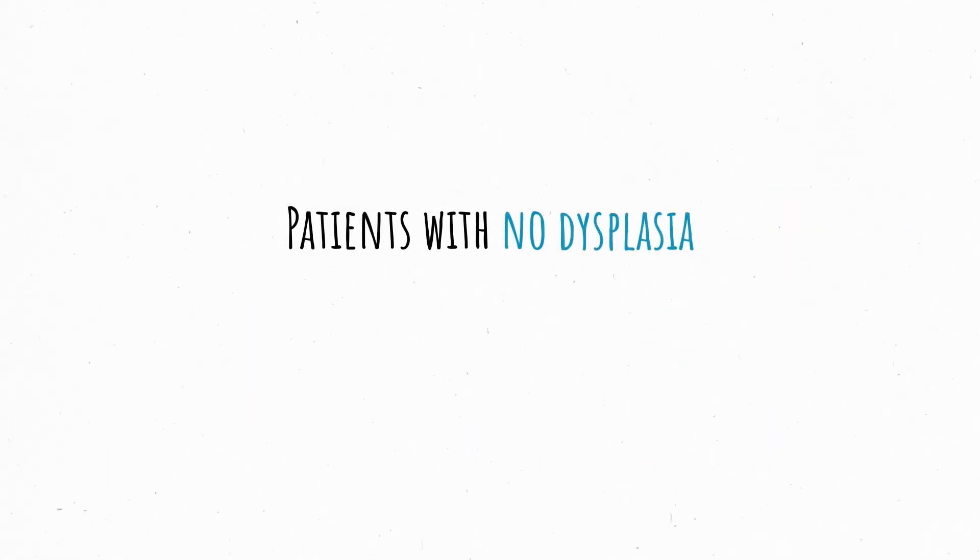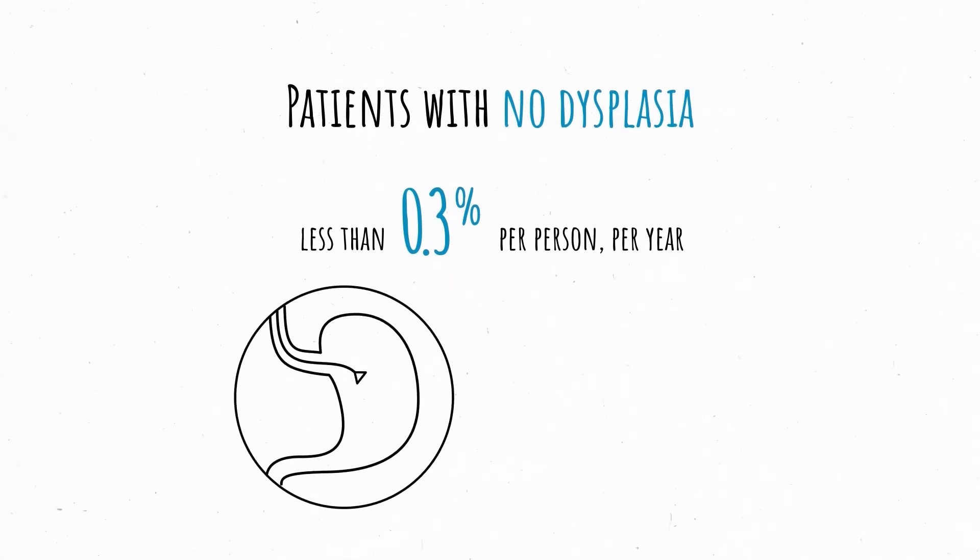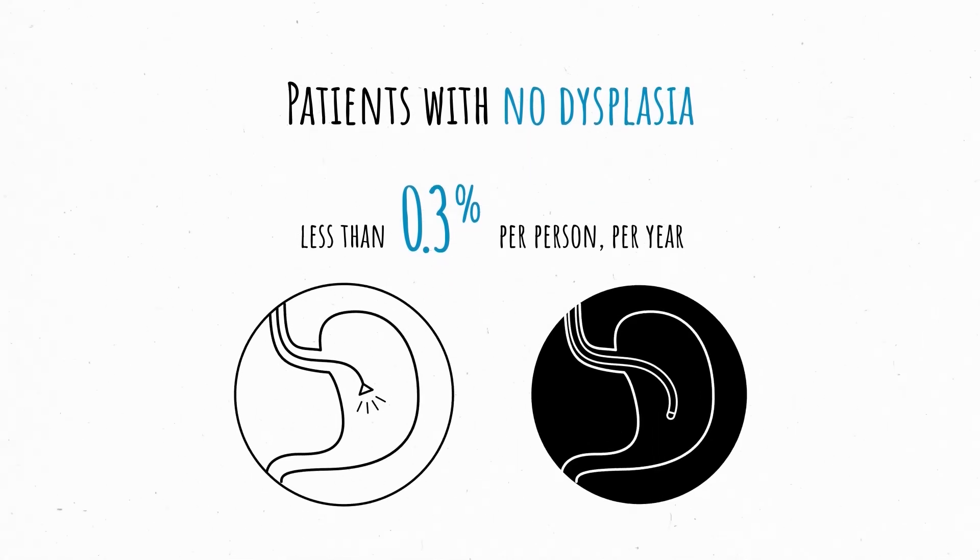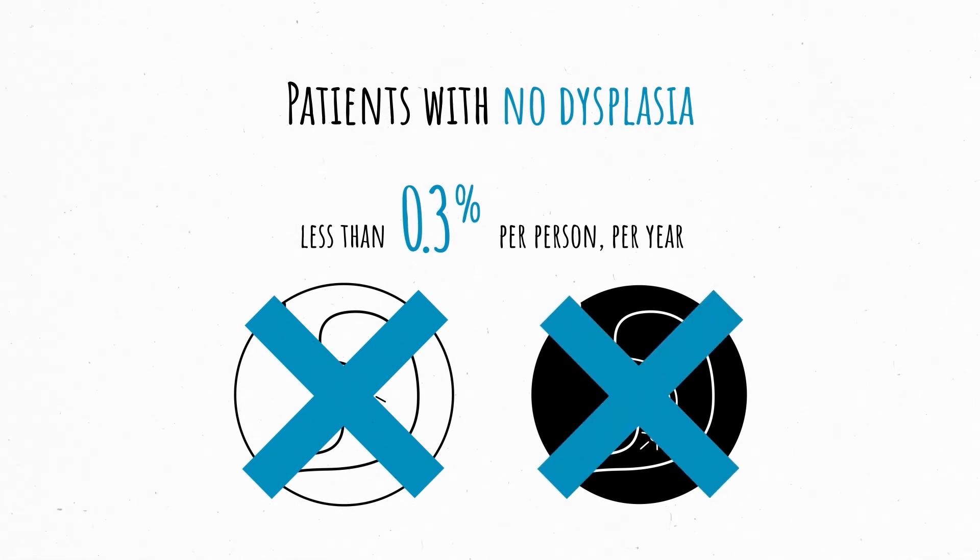Those patients with no dysplasia have less than a 0.3% per person per year chance of developing esophageal cancer. Most of these patients would likely not benefit from aggressive treatments and multiple endoscopies to completely eliminate the Barrett's tissue, as these treatments come with an associated risk.